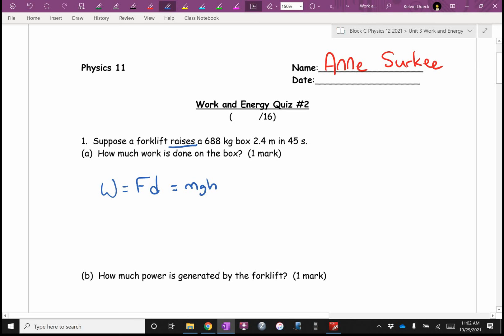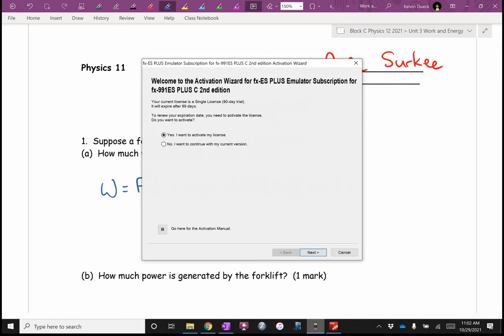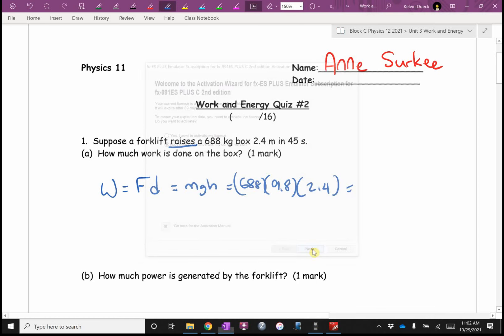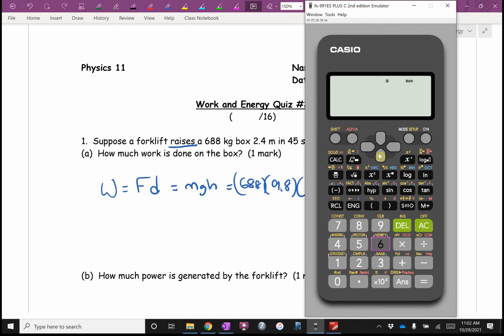This is the work-energy theorem in disguise where there's no change in kinetic. Find it. Okay, so it's gonna be 688 times 9.8 times 2.4. Trying a newer calculator, a different one, a scientific one. 688 times 9.8 times 2.4. Are those numbers big enough Alicia for you to actually read the calculator numbers at the back? Okay, that's what I was kind of hoping for. Do you get sixteen thousand two hundred? That's what I'll write, but I'll store this on my calculator.